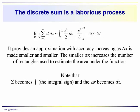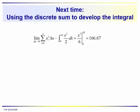Note that the sigma becomes what we call the integral sign — this elongated S — and delta x becomes dx. Next time we're going to use the discrete sum, start off with this, and show that we can actually end up developing the integral — specifically the power rule — by using a discrete sum approach. See you next time!